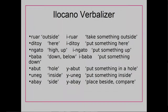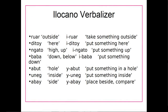In the language Ilocano, they have what's called a verbalizer affix, which basically takes a noun and changes it into a verb. For example, we have the word 'ruar' meaning outside. This word can take the prefix 'e' to become 'eruar,' meaning 'take something outside.' We also have 'ditoy' meaning 'here,' which takes the affix 'e' again to become 'editoy,' meaning 'put something here.' Then 'ngato,' meaning high or up, becomes 'ingato,' meaning 'put something up.' So adding this 'e' prefix to a word means 'put something at that location.'